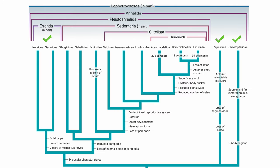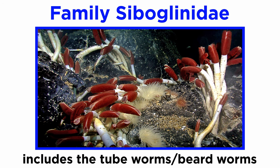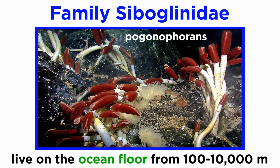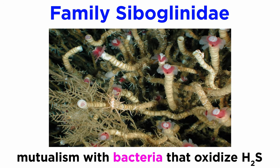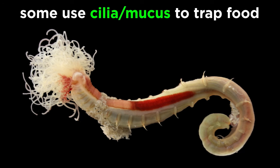Now let's take a look back at our cladogram. The last major group of annelids is Sedentaria. Notice that this group contains both marine, terrestrial, and freshwater segmented worms, though in this tutorial we will cover only the marine or polychaete forms. The largest family of sedentary polychaetes is Siboglinidae, which includes the aforementioned giant tube worms, also known as beard worms or pogonophorans, which used to be considered a separate phylum. They live on the ocean floor from depths of 100 to 10,000 meters and are largely sessile animals that secrete long chitinous tubes in which they live. They are noted for their mutualistic association with chemotrophic bacteria that oxidize hydrogen sulfide to provide organic compounds from carbon dioxide. Beard worms house the bacterial symbionts in an organ called a trophosome.